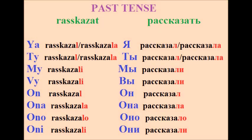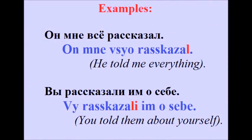Past tense of рассказать: Я рассказал / я рассказала, ты рассказал / ты рассказала, мы рассказали, вы рассказали, он рассказал, она рассказала, оно рассказало, они рассказали. Examples: Он мне всё рассказал — He told me everything. Вы рассказали им о себе — You told them about yourself.